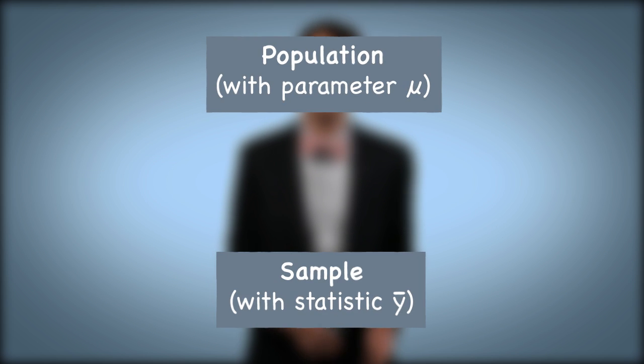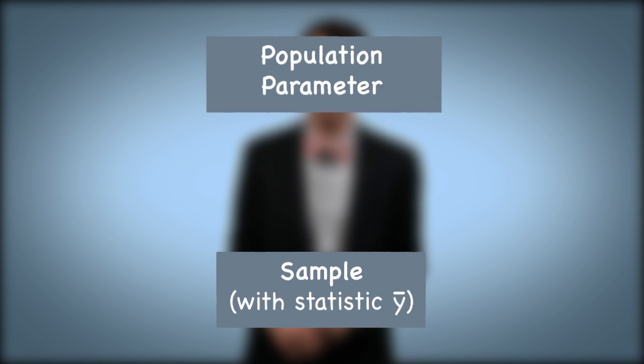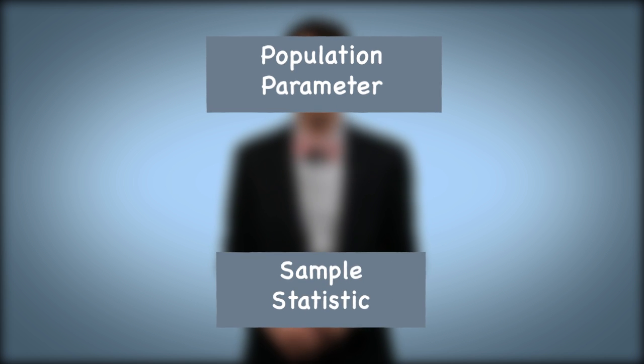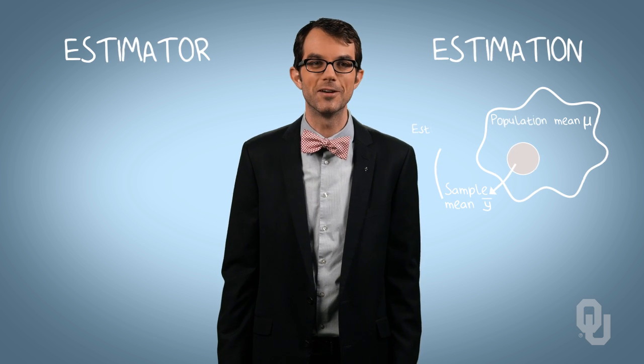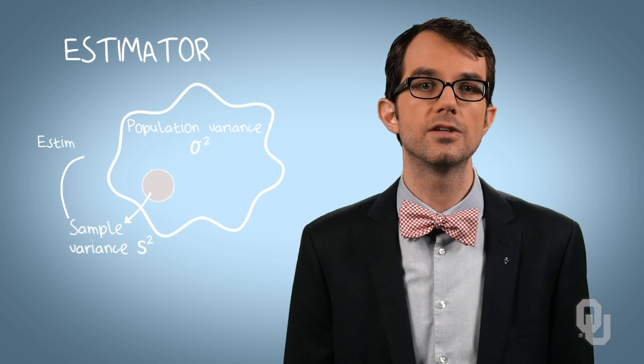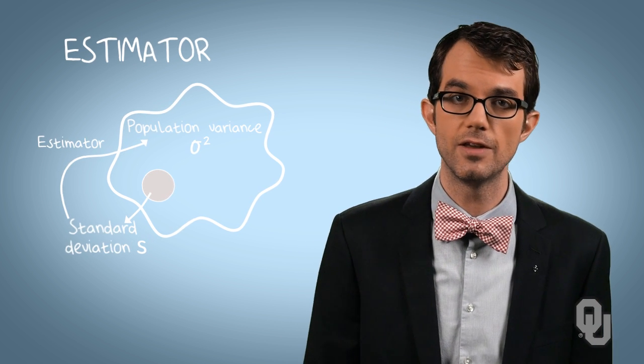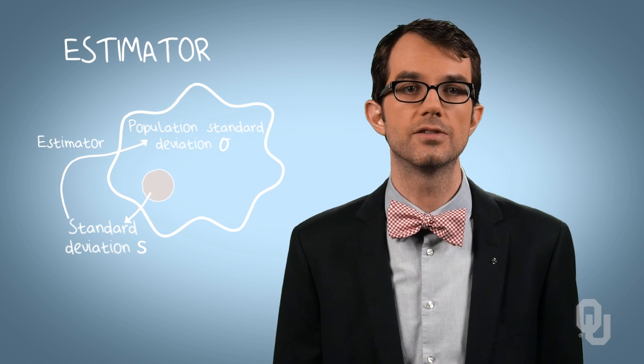Note the difference: population parameter and sample statistic. When we're talking about means, the population mean mu is the population parameter, and sample mean y-bar is the sample statistic. The branch of statistics that lets us take a sample from a population and draw inferences about the population is called inferential statistics. The assignment of values to a population parameter based on a value of a corresponding sample statistic is called estimation. The sample statistic used to estimate a population parameter is called an estimator. Our estimator for mu is y-bar. Sample variance S-squared is the estimator for population variance sigma-squared, and likewise, the standard deviation S from the sample is the estimator of population standard deviation sigma.